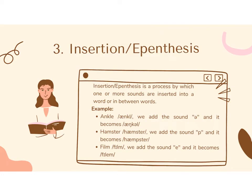Number three: insertion, or epenthesis. Insertion or epenthesis is a process by which one or more sounds are inserted into a word or in between words. For example, in the word ankle, we add the sound schwa and it becomes ankle. In the word hamster, we add the sound schwa and it becomes hamster.